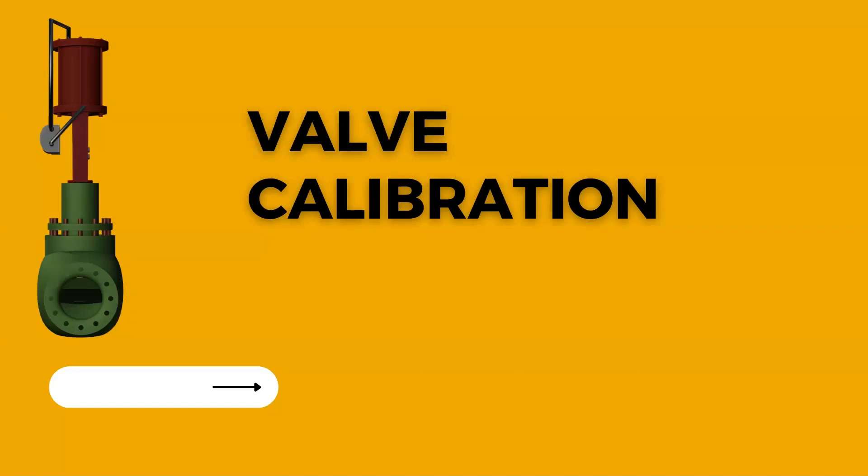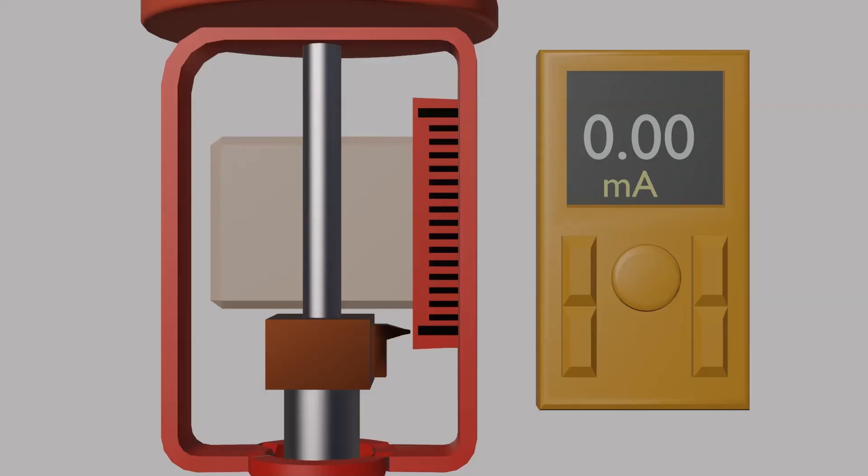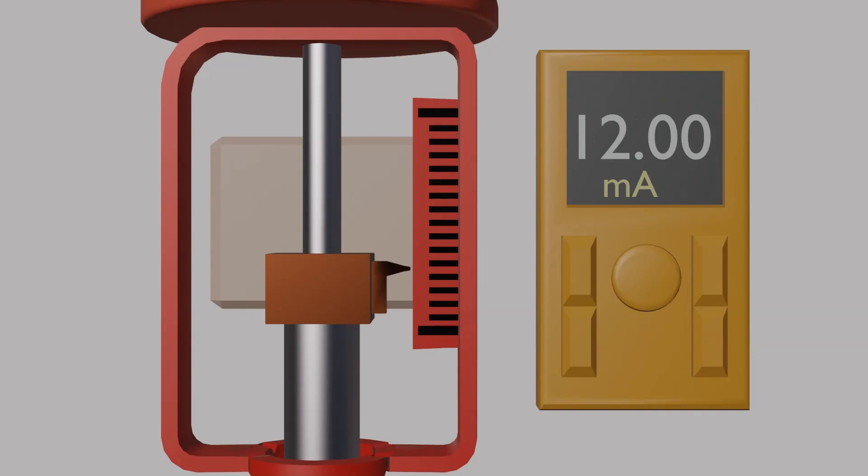Now we check the calibration of the valve positioner. We increase the signal milliampere to 4, 8, 12, 16, and 20. Also, check valve movement with respect to the corresponding signal. Valve will move smoothly without any delay.